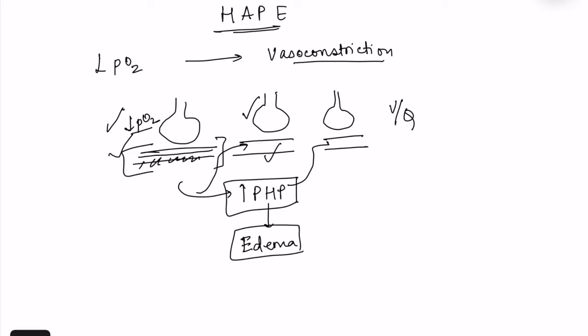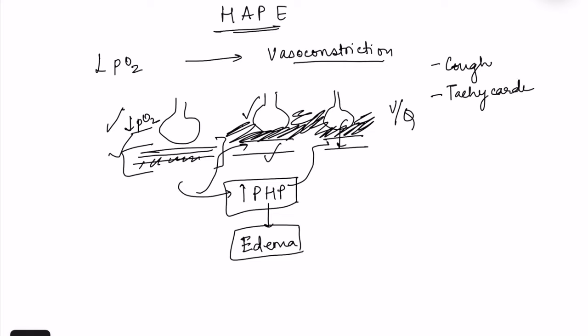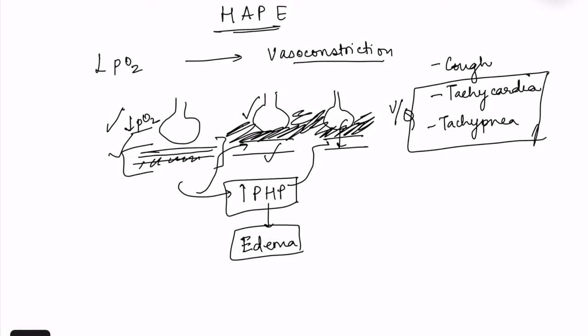When pulmonary edema develops, fluid collects in the interstitial space, increasing the thickness through which oxygen must diffuse, further decreasing oxygen diffusion and worsening hypoxia. Symptoms of HAPE include cough, and with progressive hypoxia, tachycardia and tachypnea develop. Tachycardia and tachypnea are important markers indicating that the disease is progressing.